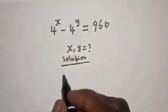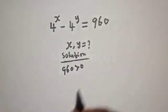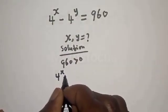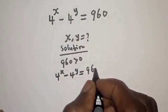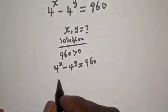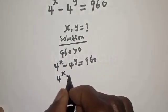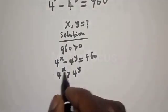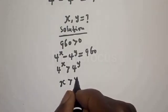From this given equation, 960 is greater than 0. Then we have 4 raised to power x minus 4 raised to power y is equal to 960. We can see that 4 raised to power x is positive and 4 raised to power y is being subtracted. Therefore, 4 raised to power x is greater than 4 raised to power y, which means x is greater than y.